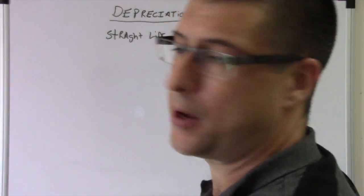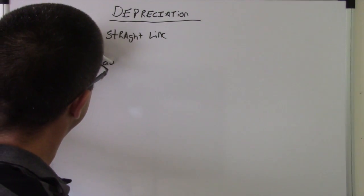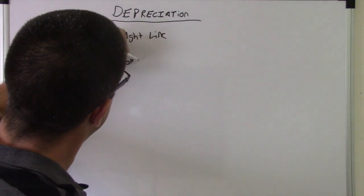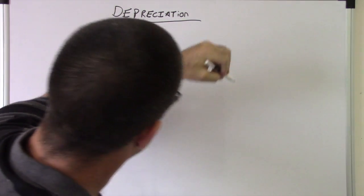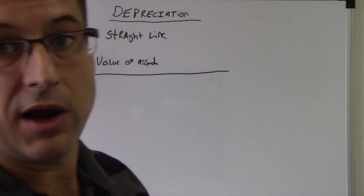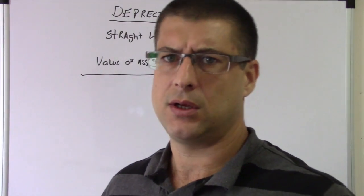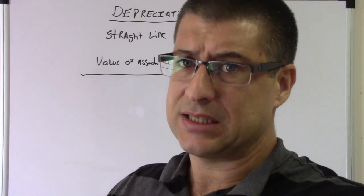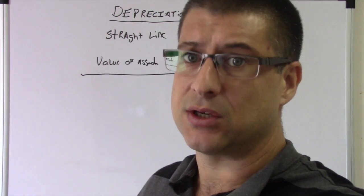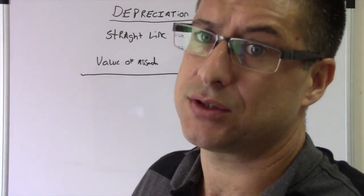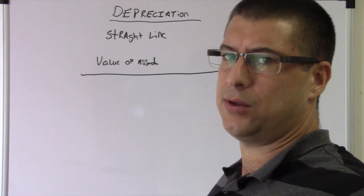Straight line depreciation: value of asset over how many years you're gonna depreciate it for. Now the IRS will tell you different assets are depreciated at different amounts of years. The IRS has guidelines as to how long. Vehicles are five years—normal vehicles are five years right now—but you would have to check.